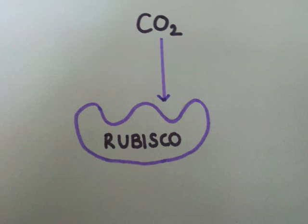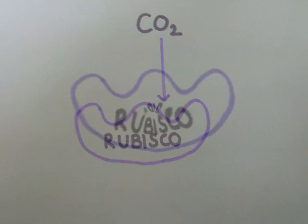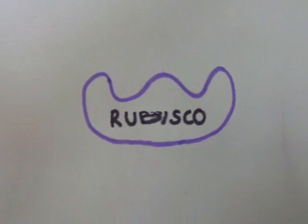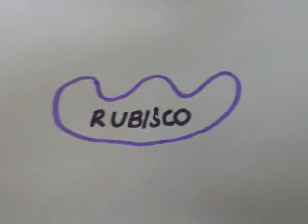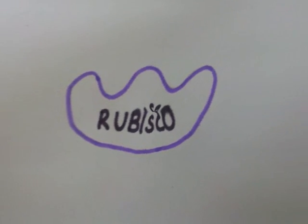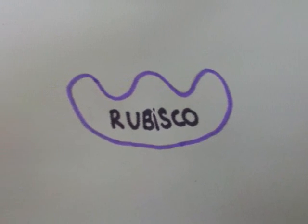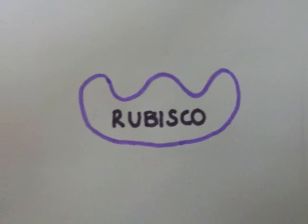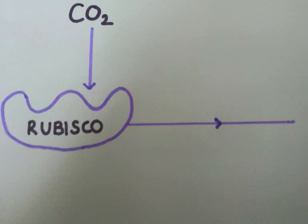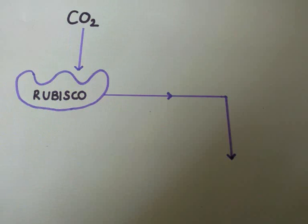In the stroma, carbon dioxide combines with a 5-carbon compound, ribulose bisphosphate, which is a carbon dioxide acceptor. The reaction is catalysed by the enzyme ribulose bisphosphate carboxylase oxygenase, usually called RuBisCO. Ribulose bisphosphate becomes carboxylated, which means that it is combined with carbon dioxide, so it now has a carboxyl group.